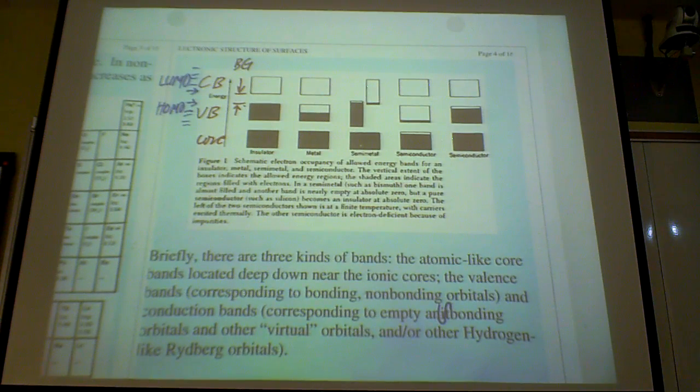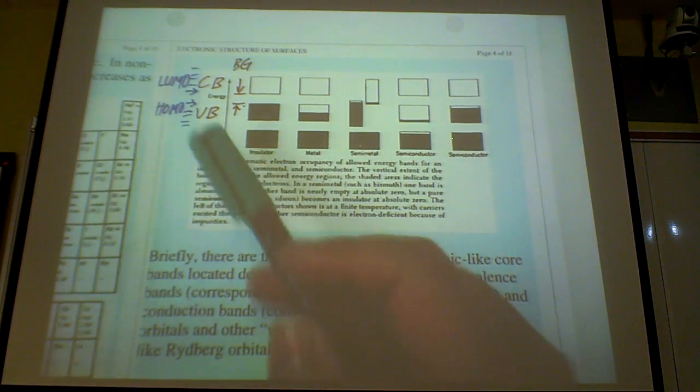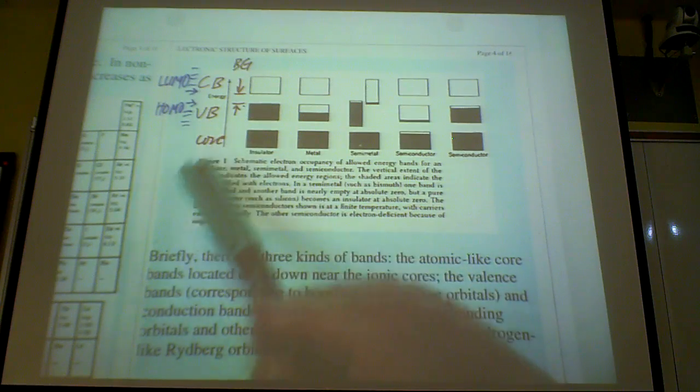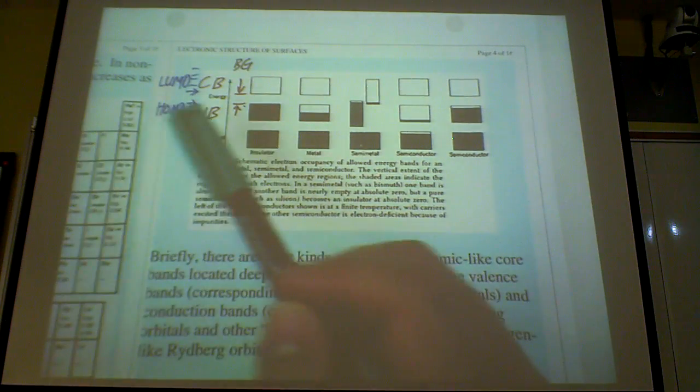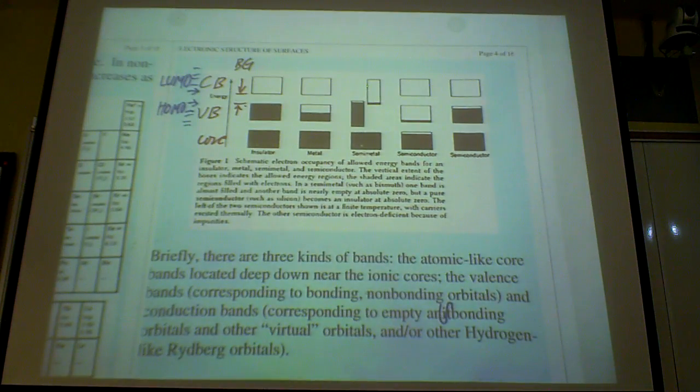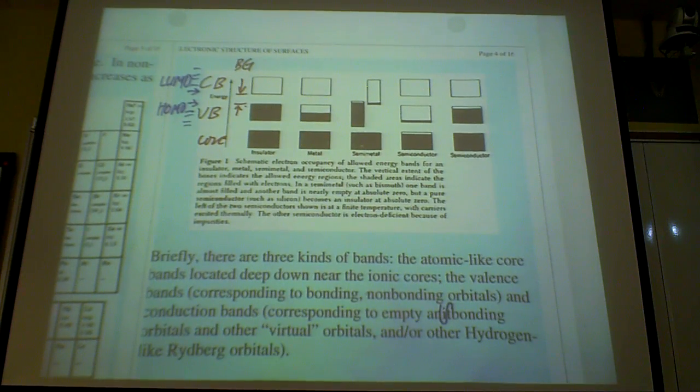But then as you go higher and higher up into the valence band orbital or valence shell orbital, what happens? The orbitals become bigger, orbitals become more diffused, and they start to interact with each other and form different types of orbitals. They form bonding orbital, non-bonding orbital, or anti-bonding orbital.